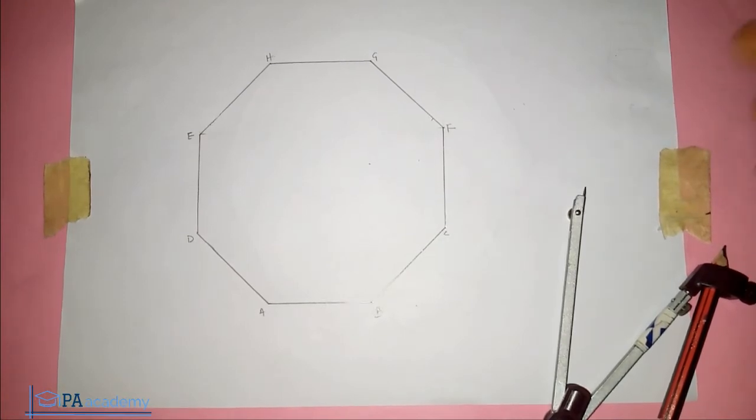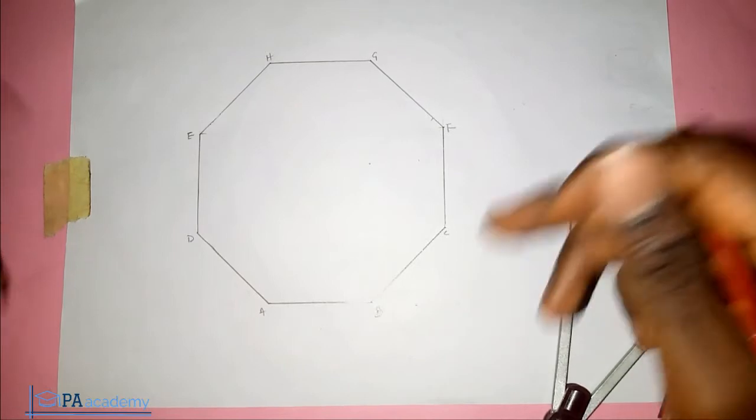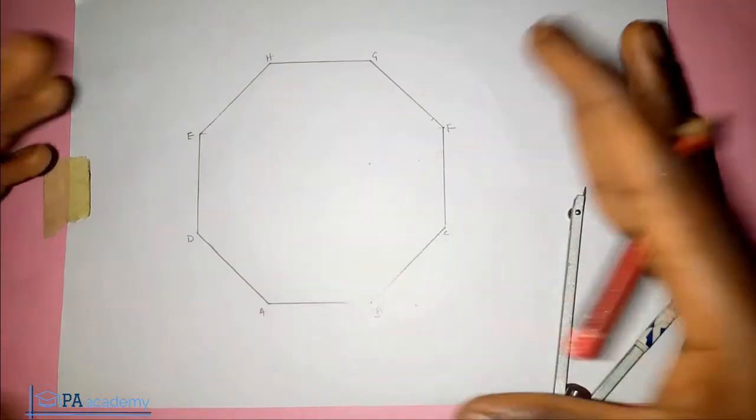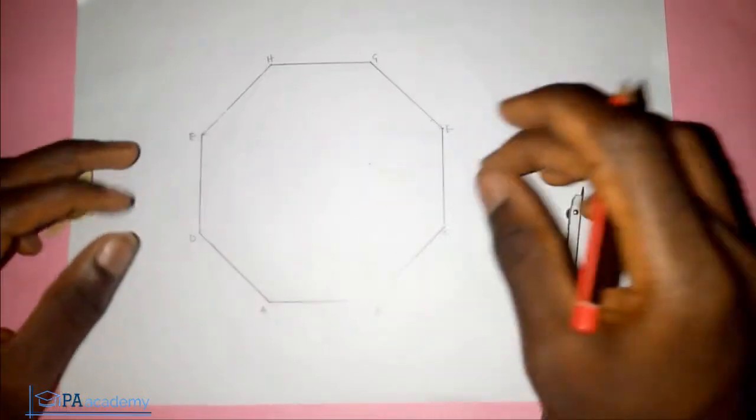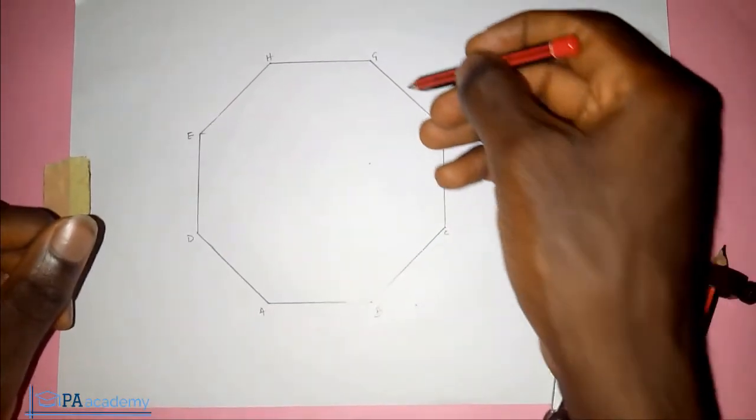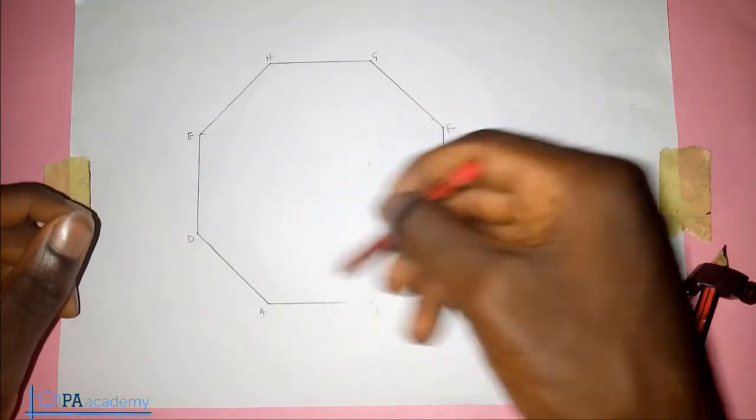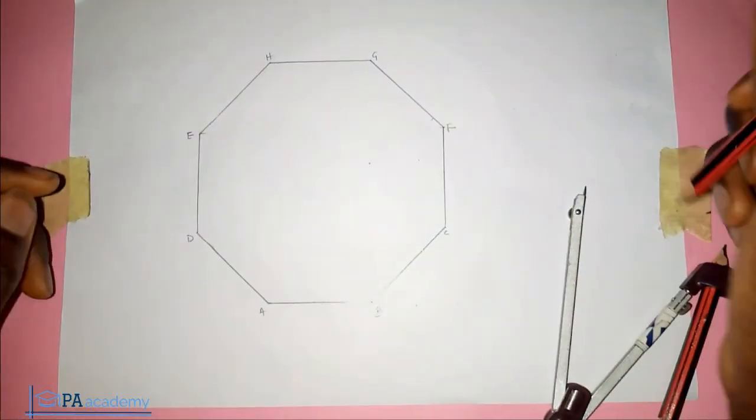If you're interested in knowing how to draw or construct an octagon, you'll find the link in the description of this video. But what we're looking at now is how to inscribe a circle inside this octagon such that the circle will touch all eight sides of the octagon.